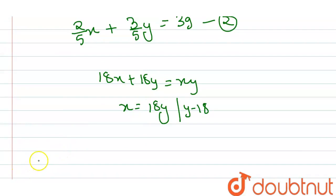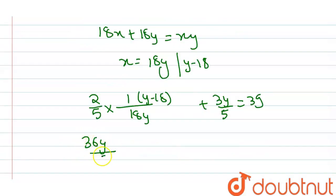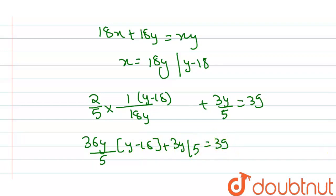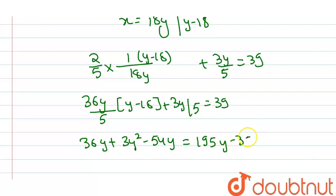इस value को जब equation 2 में डालेंगे, तो value आएगी: (2/5) × (1 / (18Y / (Y − 18))) + (3/5)Y = 39। Solve करते हैं — ये value आएगी: 36Y / (5 × (Y − 18)) + 3Y/5 = 39। इसको solve करने पर: 36Y + 3Y² − 54Y = 195Y − 3510, so 3Y² − 213Y + 3510 = 0.